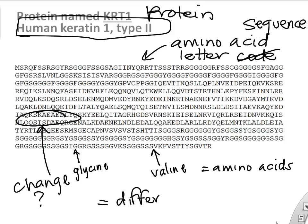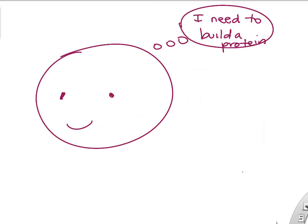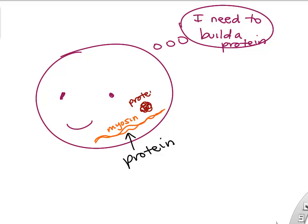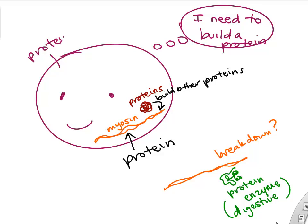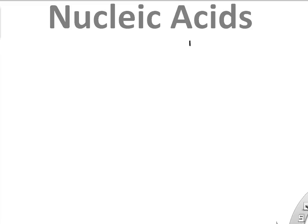If you change those amino acids, you might make a different protein. Interestingly, if your cell needs to build a protein — for example, a muscle cell wants to build myosin — it needs a functional molecule to build that protein, and those functional molecules are proteins. So proteins are able to build other proteins. Digestive enzymes are proteins that chew up other proteins or carbohydrates.